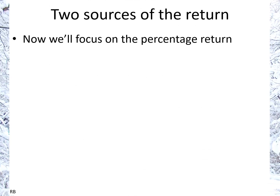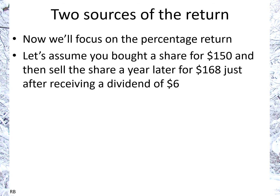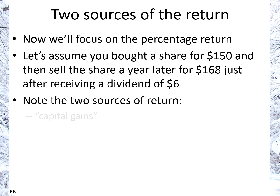Now we're going to talk about the two sources of return. Let's assume you bought a share for $150 and then sold the share a year later for $168, after receiving a dividend of $6. As you can see, there are two sources of making money — one is called capital gains, and the other is called dividends.